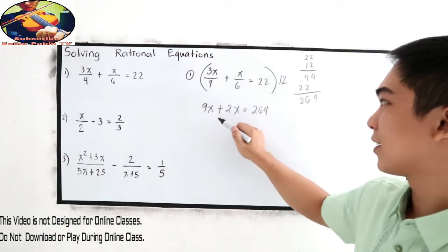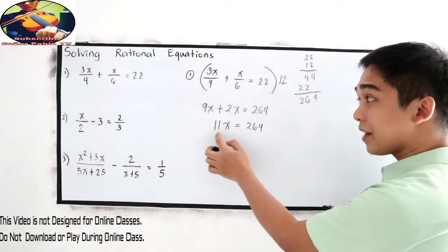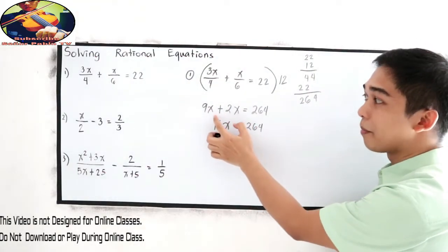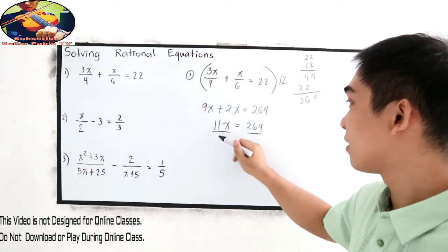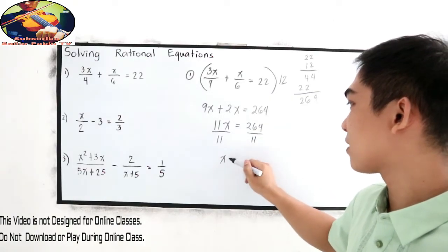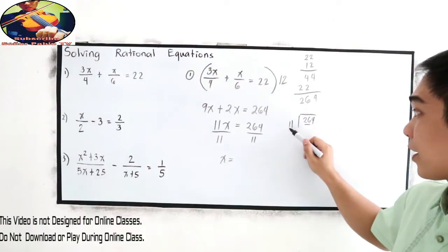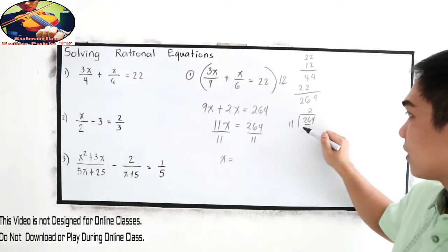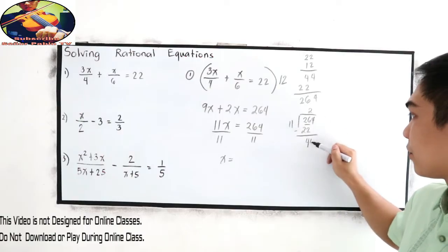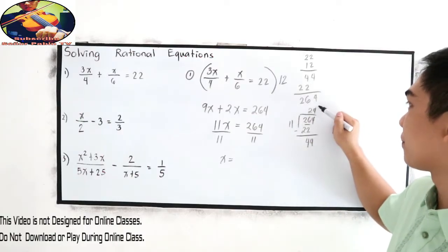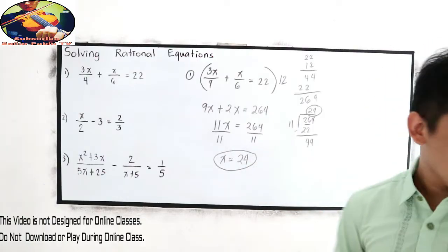So we have 264. Combine like terms: 9x plus 2x gives 11x, is equal to 264. Divide both sides by 11. 264 divided by 11: 2 times 11 is 22, bring down 44, 44 divided by 11 is 4, so x is equal to 24.